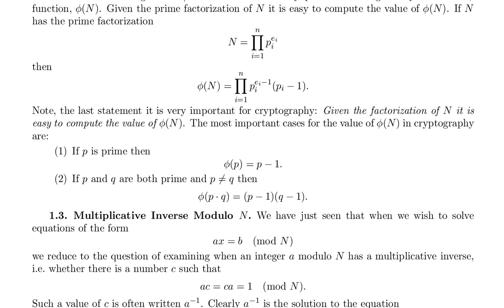If p and q are both prime and p is different from q, then phi of pq equals p minus 1 times q minus 1.